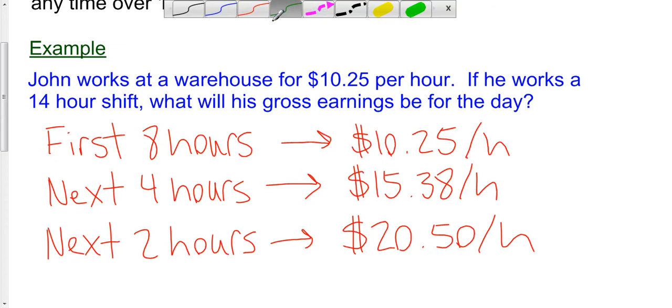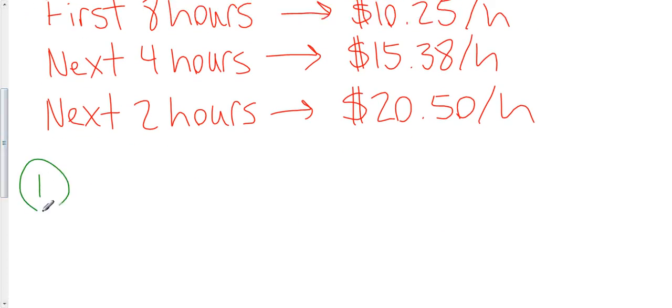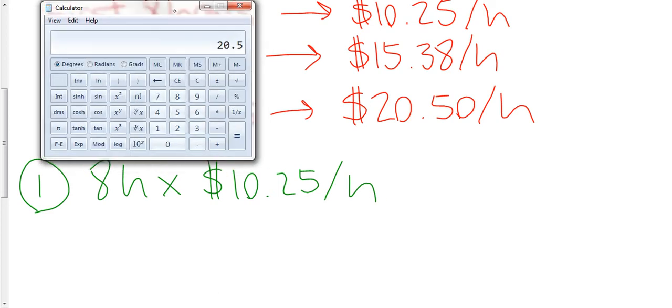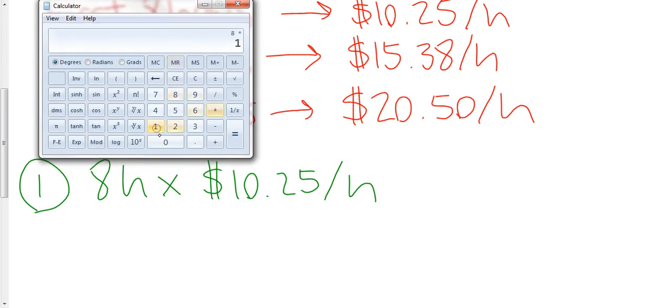So for the very first one here, we simply have eight hours at $10.25 an hour. Eight times $10.25 is $82.